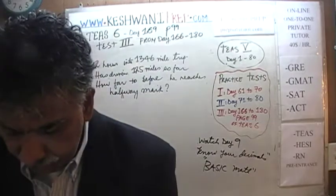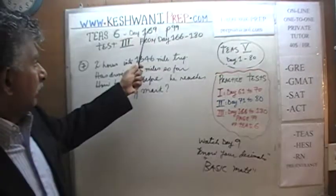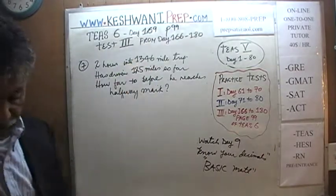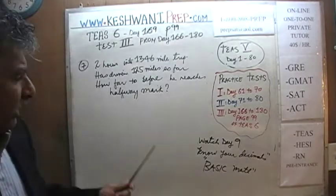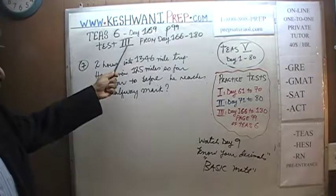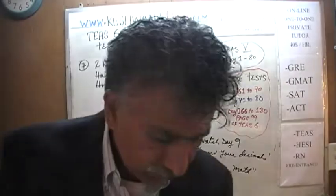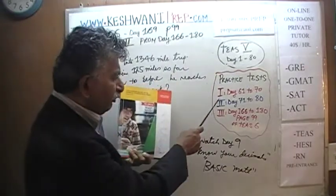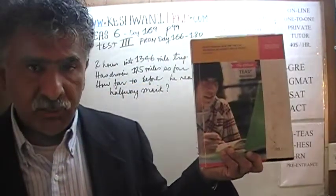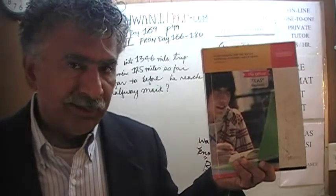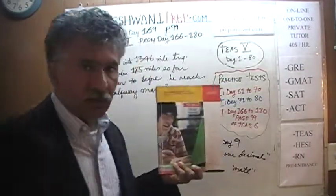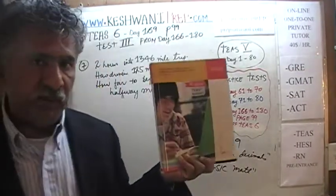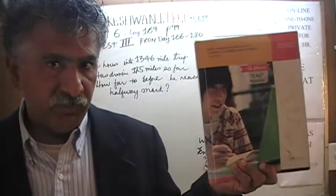Today is our lesson number 169 and we are on page number 99. We are in the process of solving the problems from the third practice test starting on page 99. If you're interested in the first two practice exams from the fifth edition, solutions to test one are from day 61 to 70, test two from day 71 to 80 — all on my channel from day one through 80.